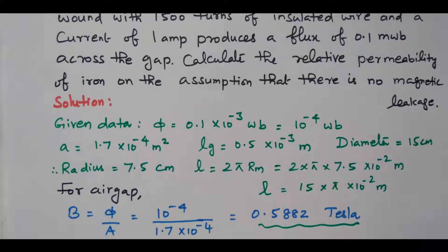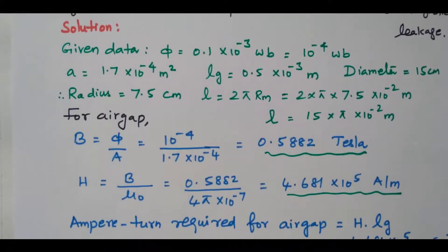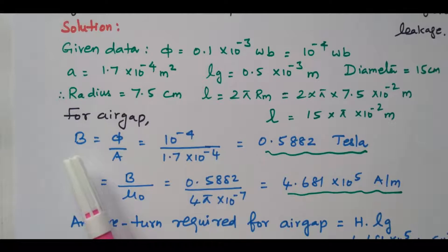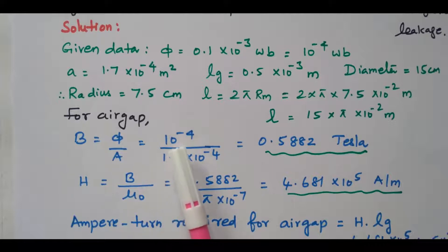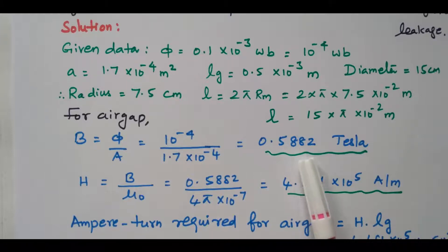Now we will find the values one by one. We need to find the relative permeability of the iron. First we will find the magnetic flux density B for the air gap. B equals φ divided by A: 10⁻⁴ divided by 1.7 × 10⁻⁴, which gives 0.5882 Tesla. The magnetic flux density is calculated.